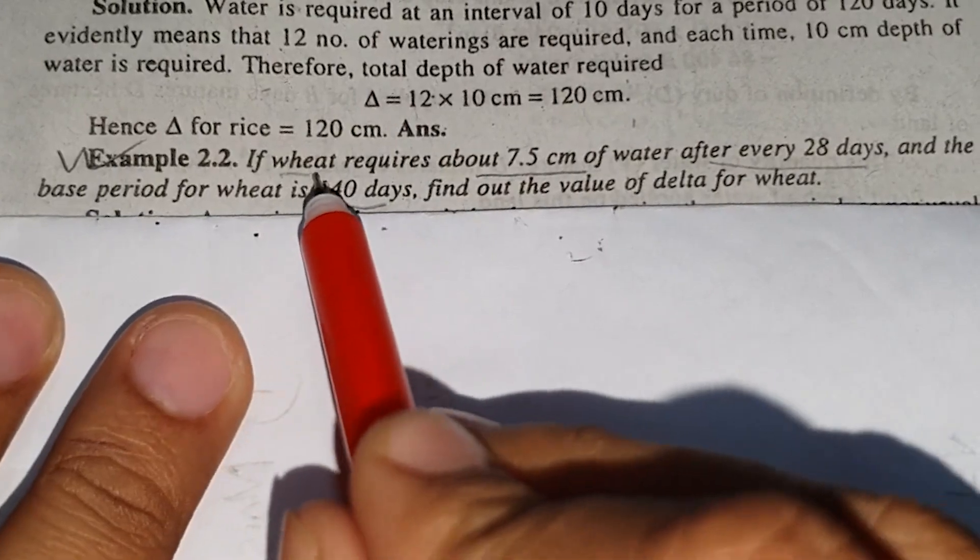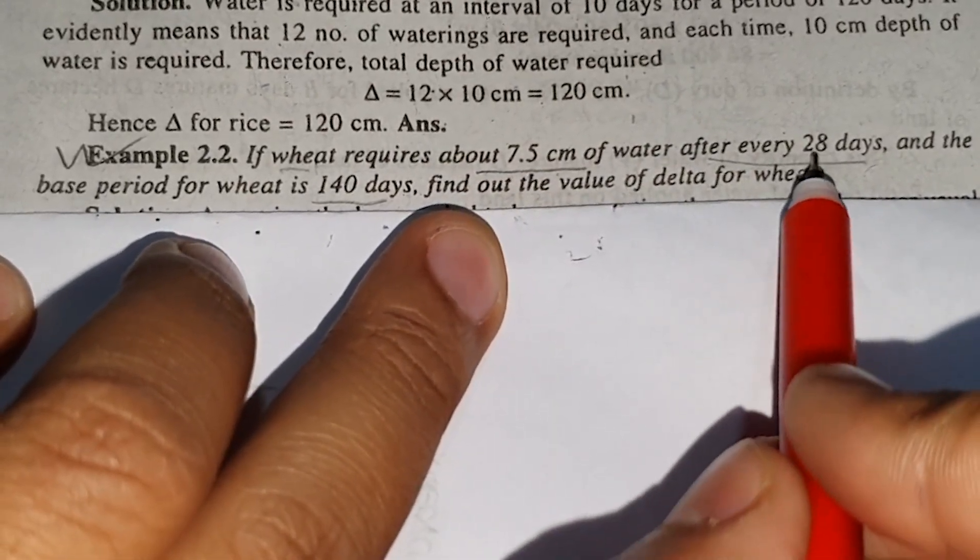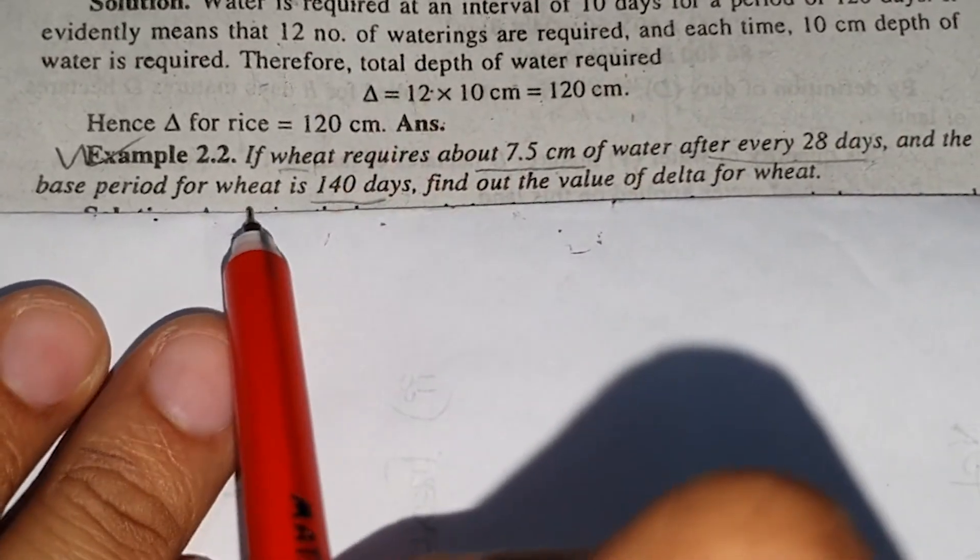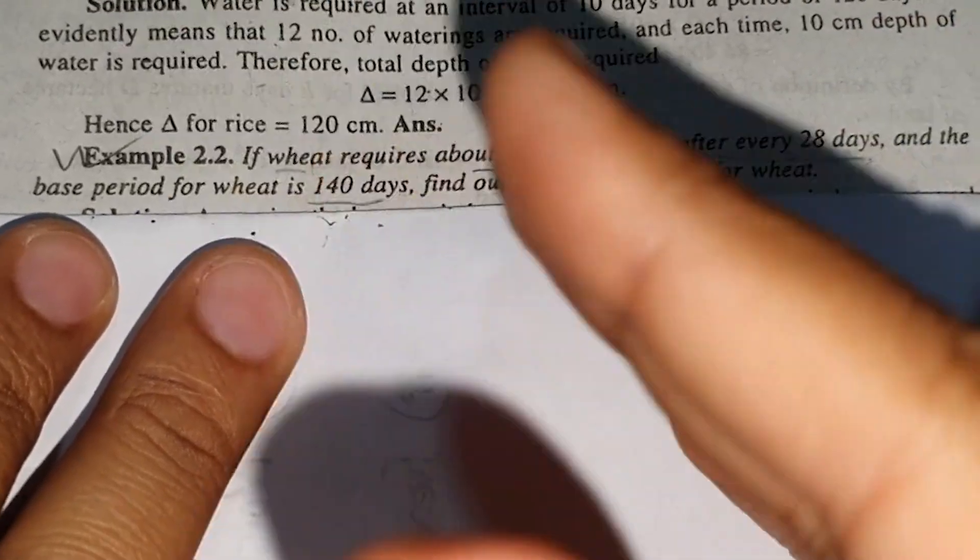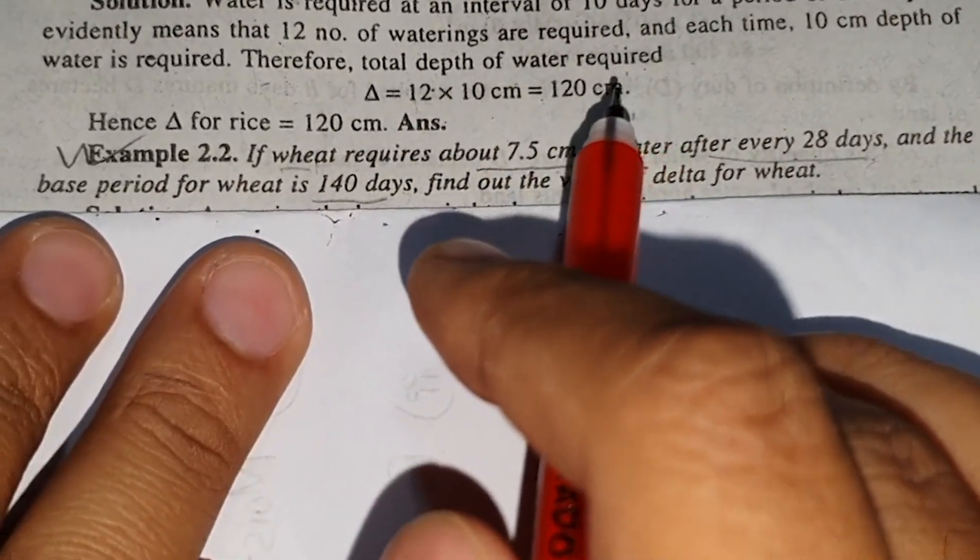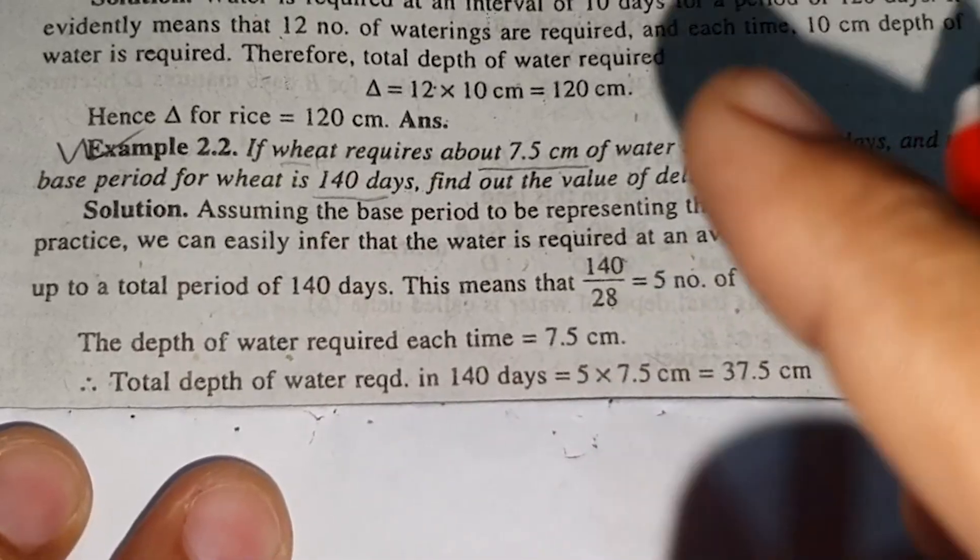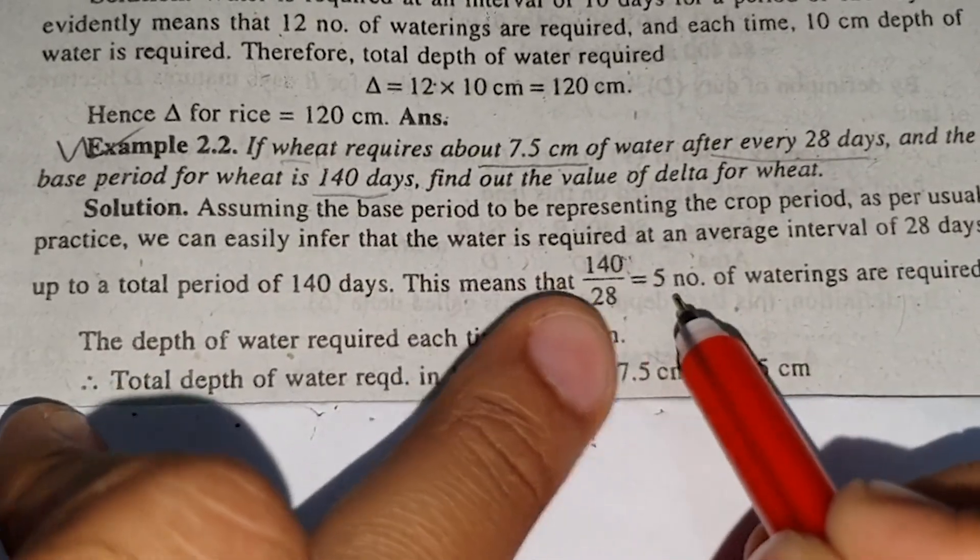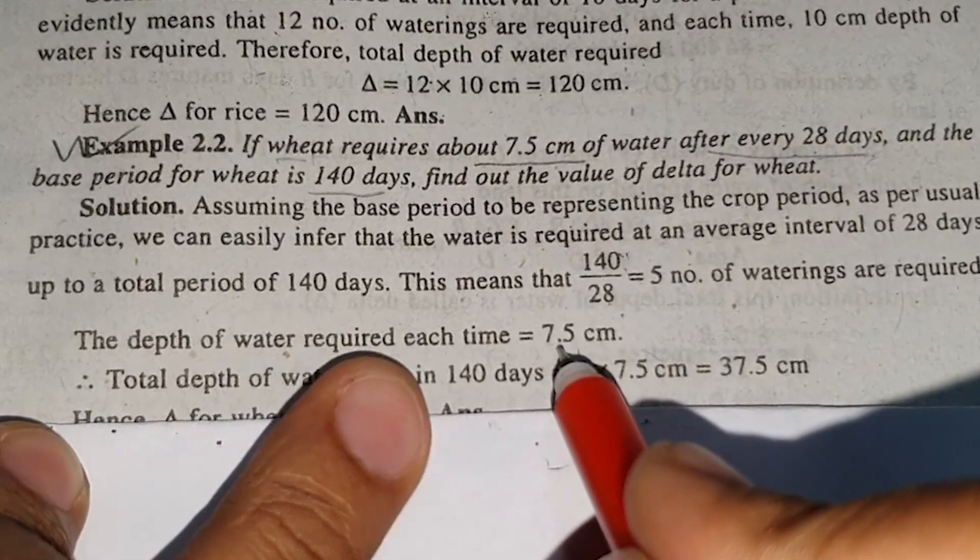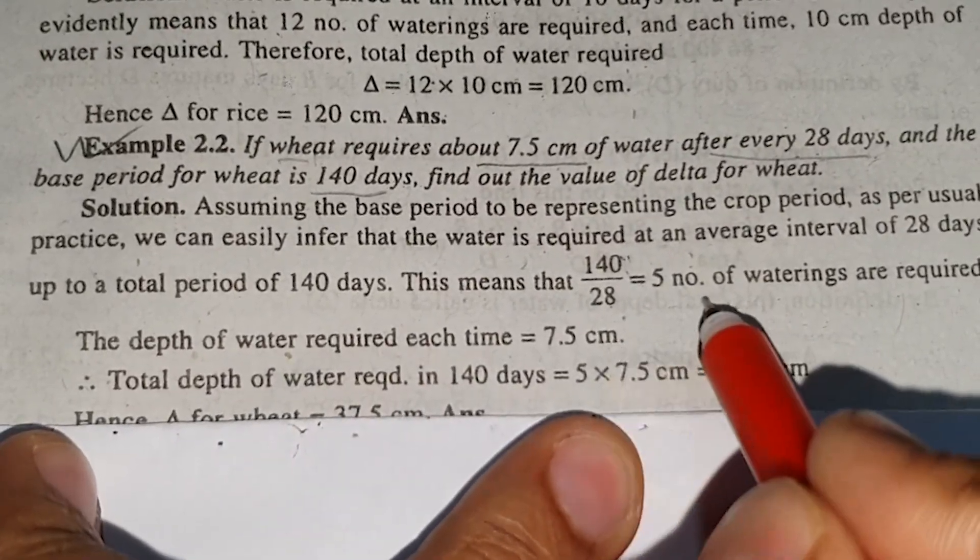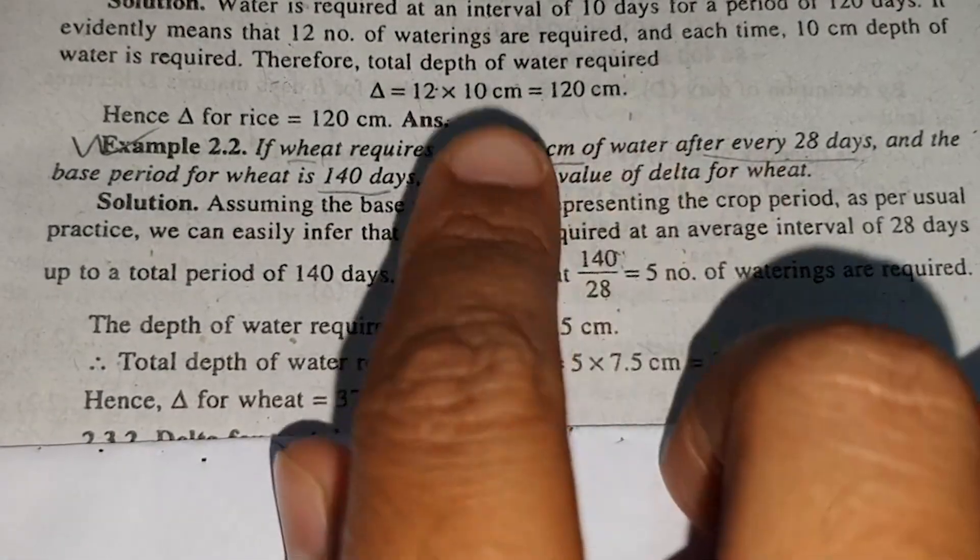Example 2.2: Wheat requires 7.5 centimeter water every 28 days, and the base period is 140 days. Find out the delta. 140 divided by 28 equals 5, so there are 5 waterings. Each watering is 7.5 centimeter, so the total delta is 5 times 7.5 equals 37.5. The answer is 37.5 centimeter.